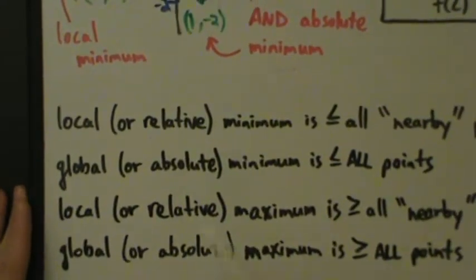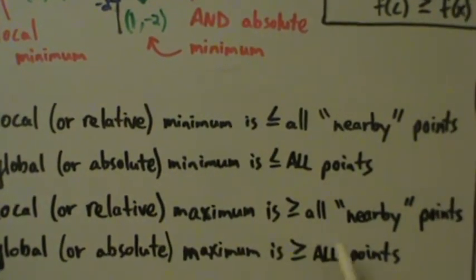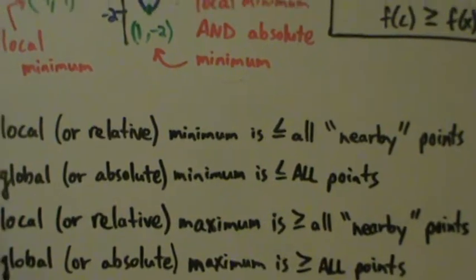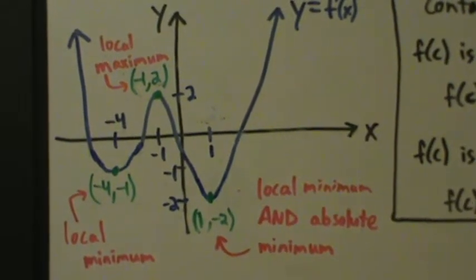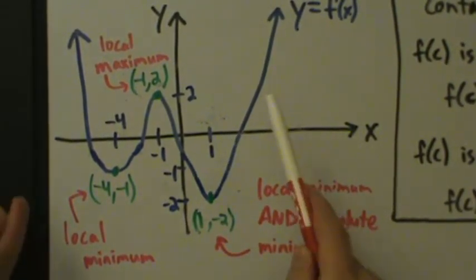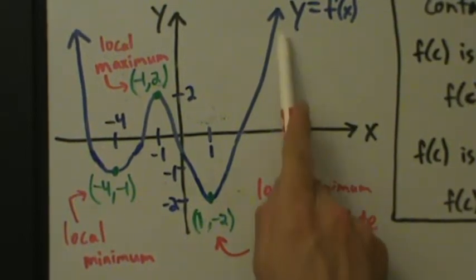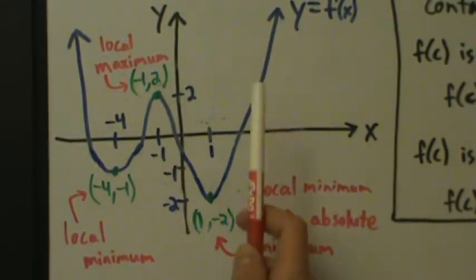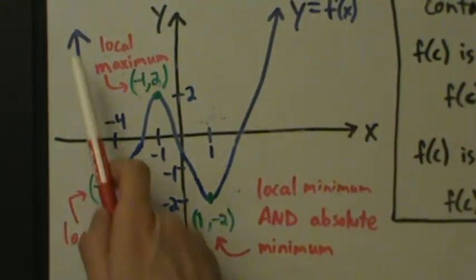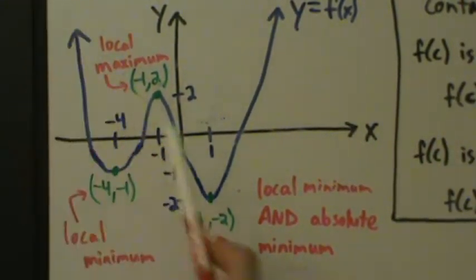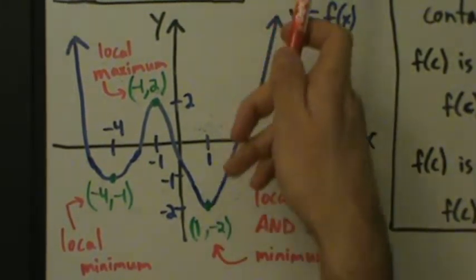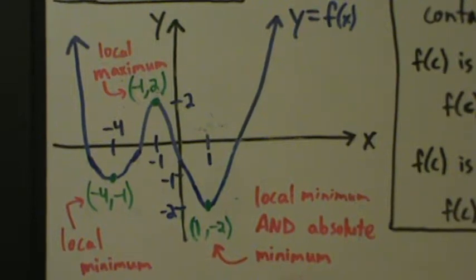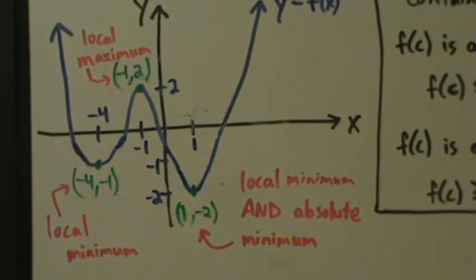A global or absolute max is greater than or equal to all the points on the function. This function actually has no global maximum, no absolute maximum, because no matter how big a y value you find, you're always going to find a larger one. The arrows mean the function keeps going up forever without stopping. So there is no absolute or global maximum — you can have as large a value on the function as you want.